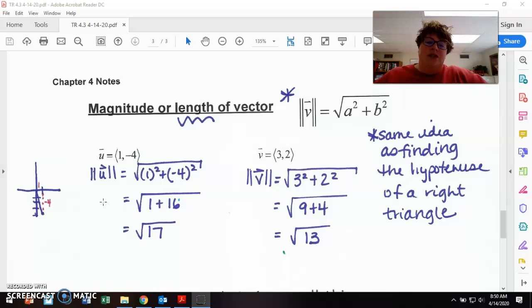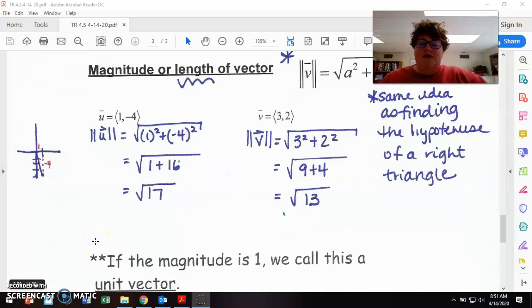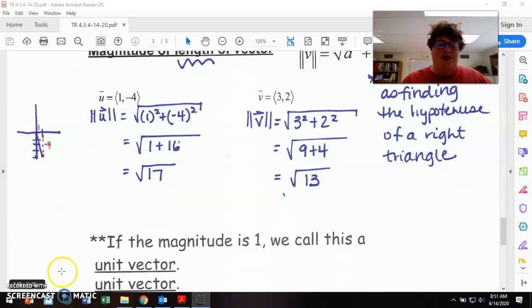Now this is the same idea as finding the hypotenuse of a right triangle. We're also going to use this idea of finding the magnitude or the length of that vector on Thursday when we do complex trig functions. So we will definitely see this information again. If you work your problem, you're finding the magnitude and you get your magnitude to be one, we call this unit vector. And the reason for that is that means the length of that is one, which means it corresponds to the radius is one and goes back to our unit circle.